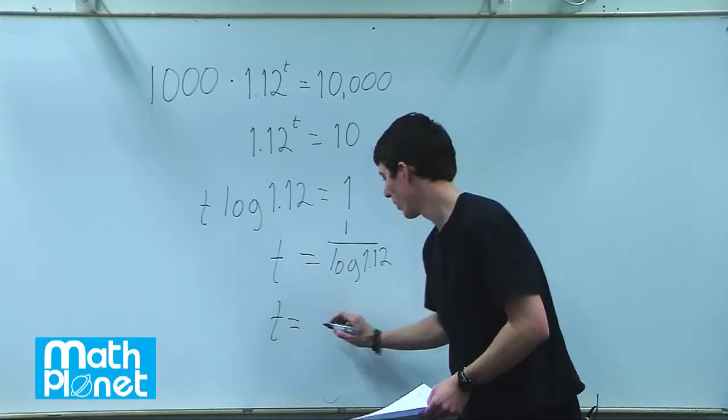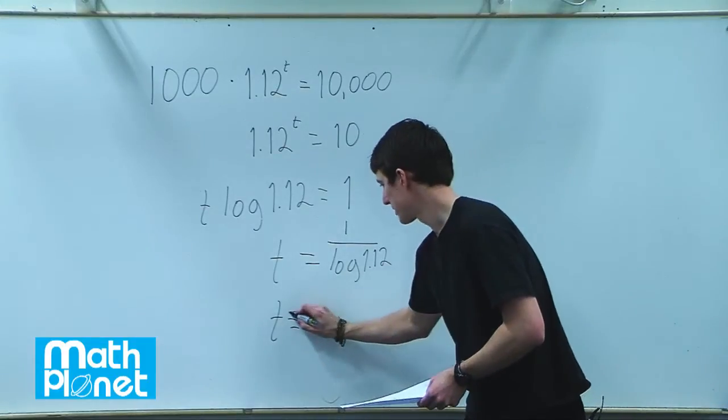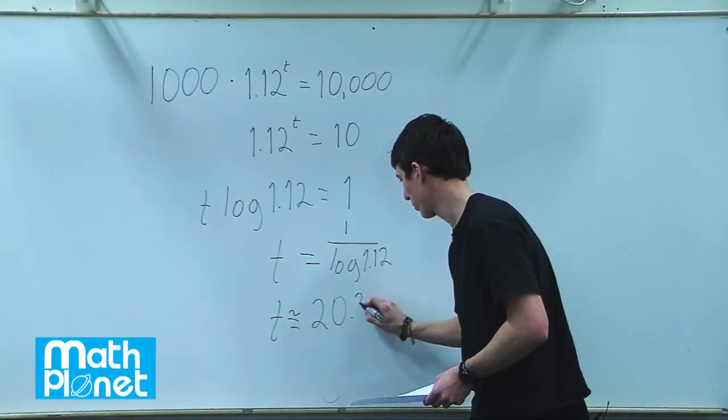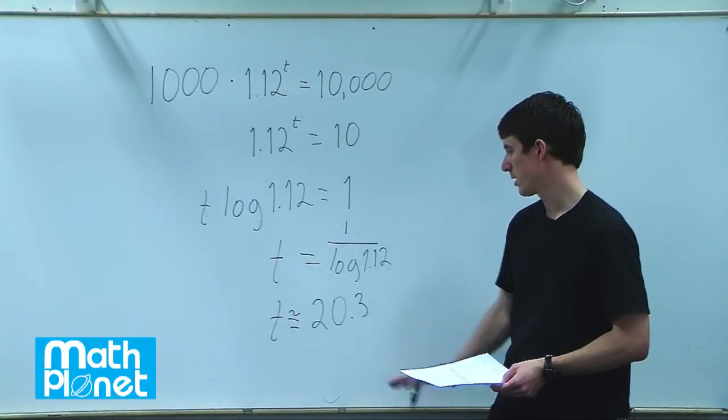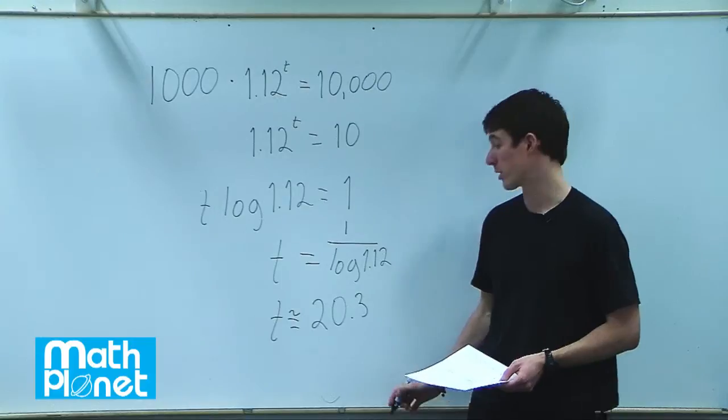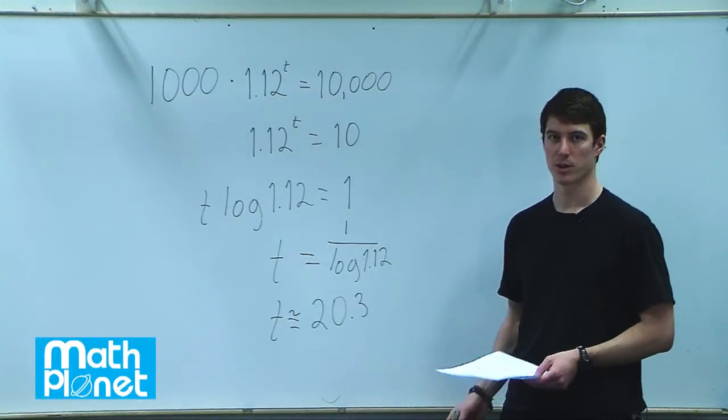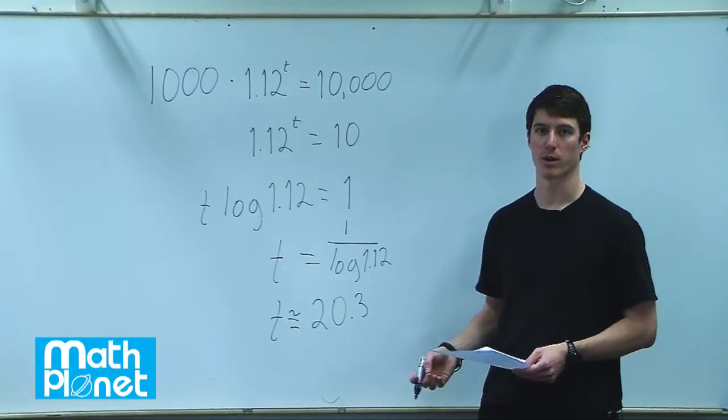what we find is time is approximately equal to 20.3 years. So we can say time is 20.3 years. We could also say 20 years and 3 tenths of a year. 3 tenths of a year is about 4 months. So we could say 20.3 years or 20 years and 4 months.